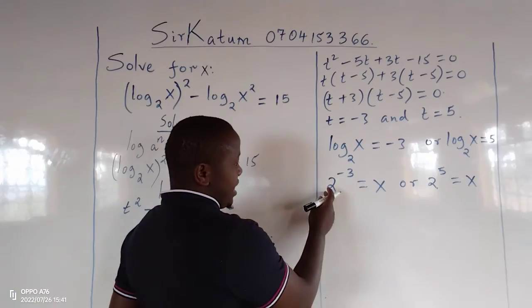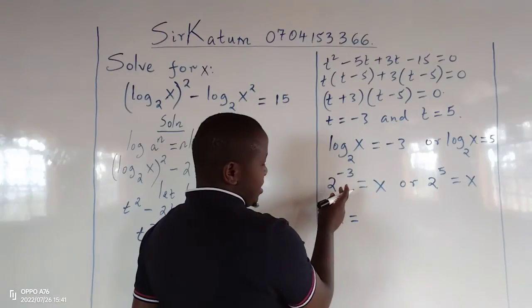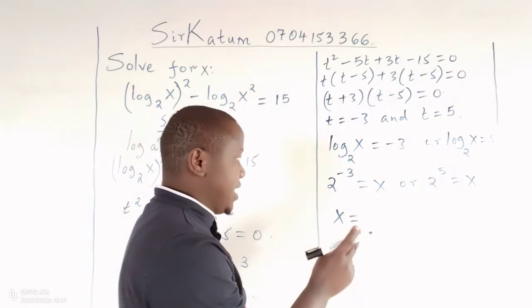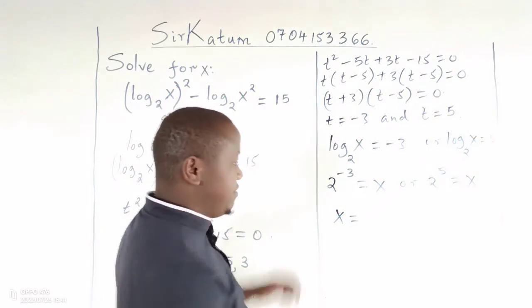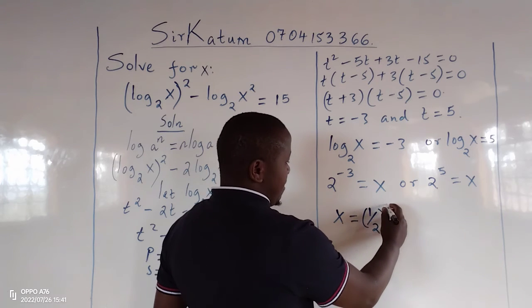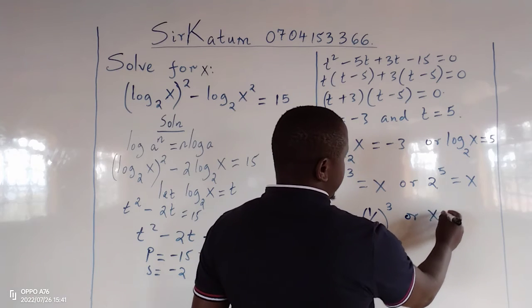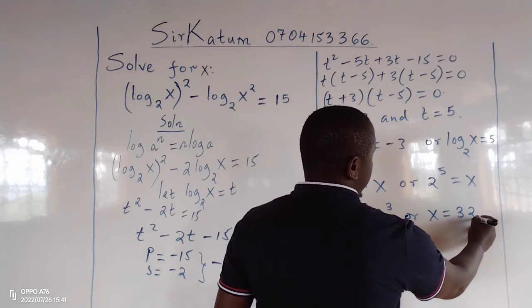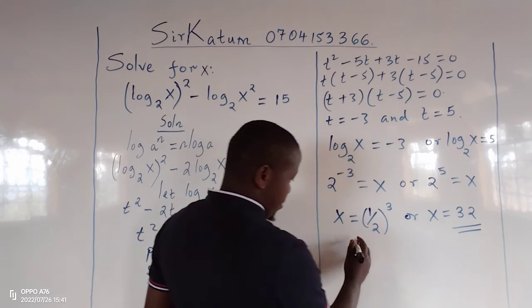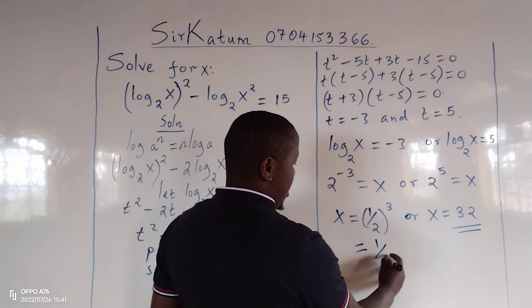From that step, we can get the values of x, so that the first x becomes, according to the laws of indices, when the power is negative, we take the reciprocal of the number and the power assumes a positive sign, or x equals 32. So one value is 32 and the other value is 1 out of 8.